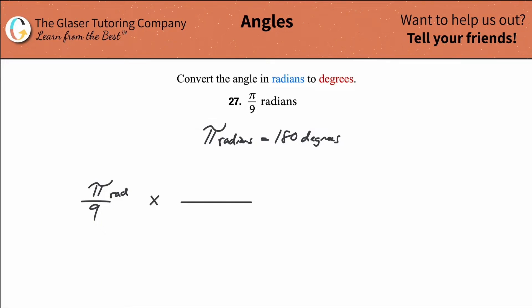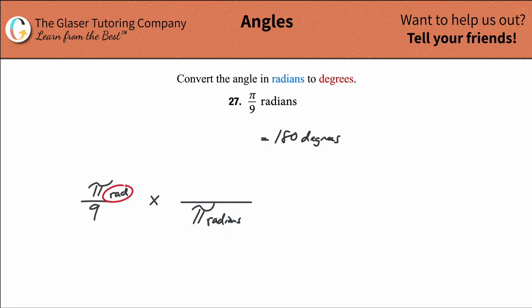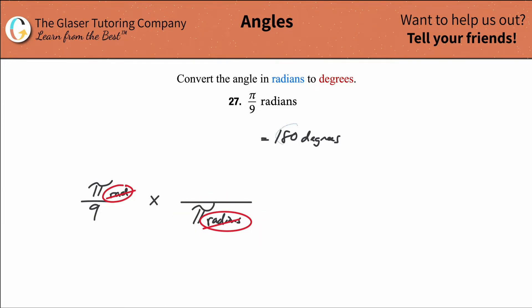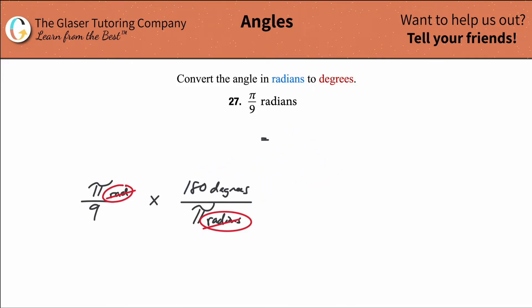Since the radians are in the numerator here, I want to plug this value of radians into the denominator — that way the radians will cancel. But if I plug in π radians on the bottom, I have to plug in its equivalent value in degrees up on top. The degrees won't cancel, which is good because that's what we want our unit to be in terms of degrees.